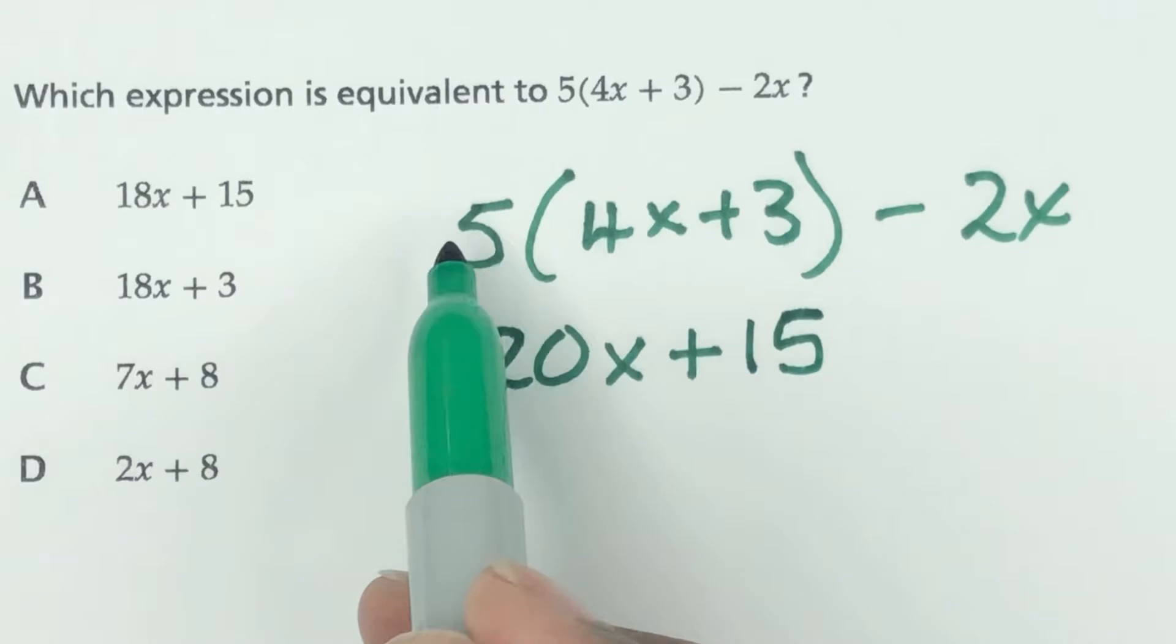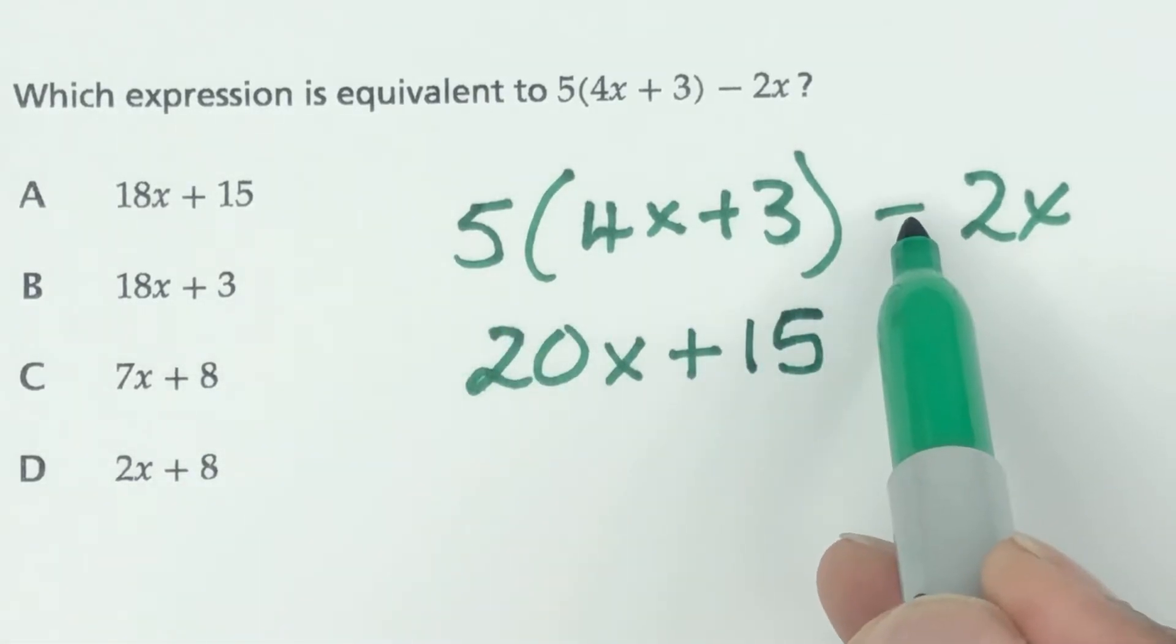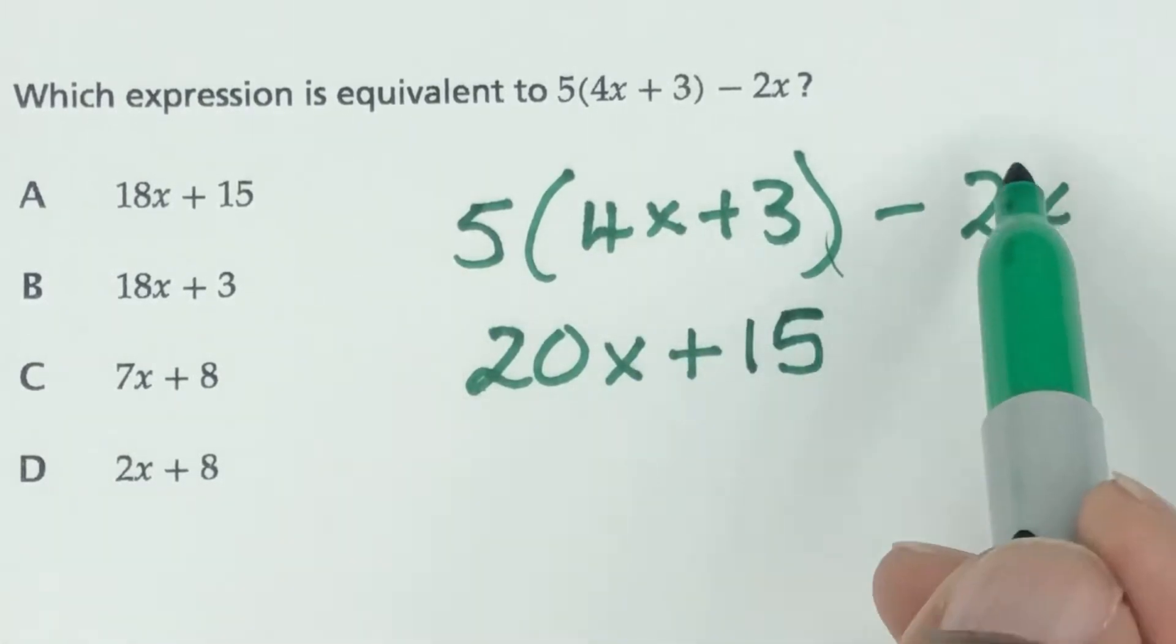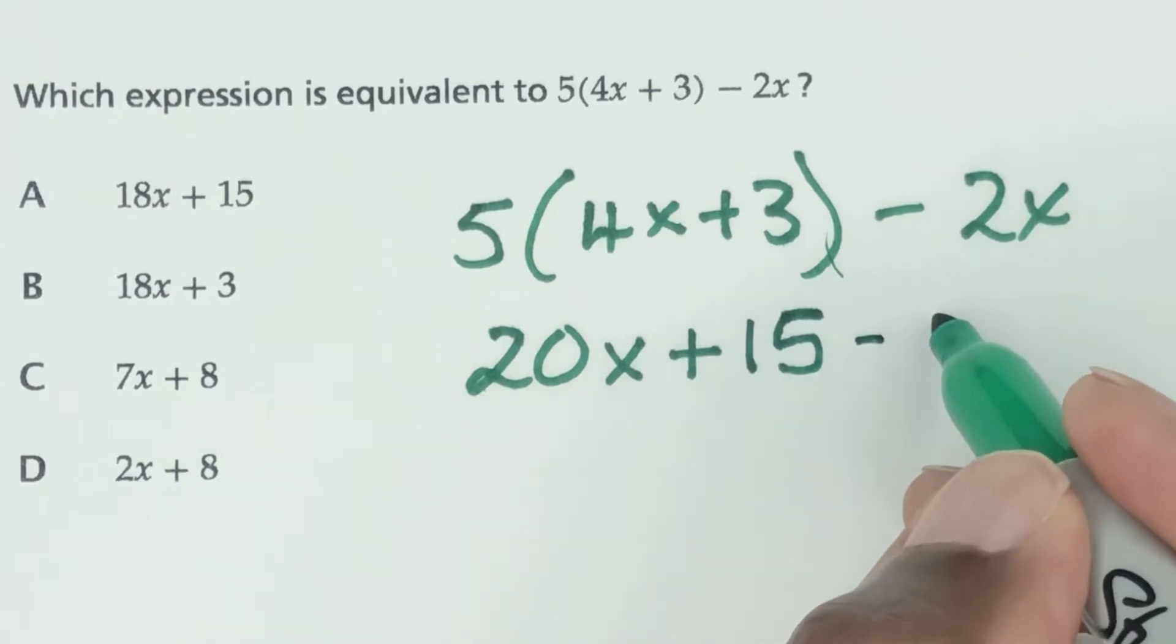No sign means plus, so this plus sign multiplied by that, but you have to multiply here now because this 5 only gets multiplied by what's inside. So for this here you just tag the 2x on at the end.